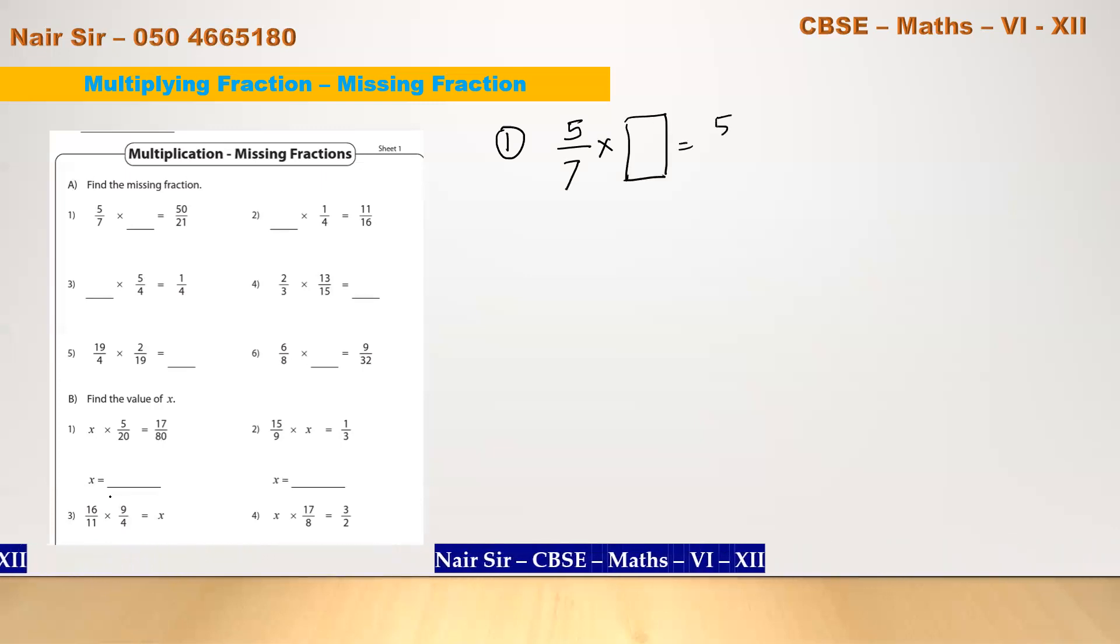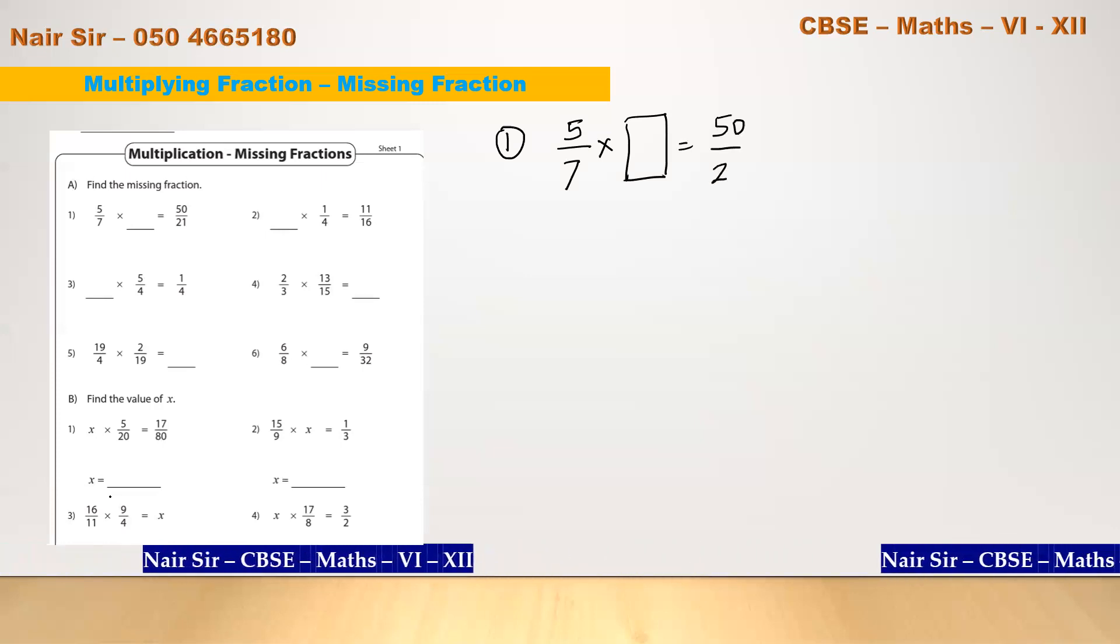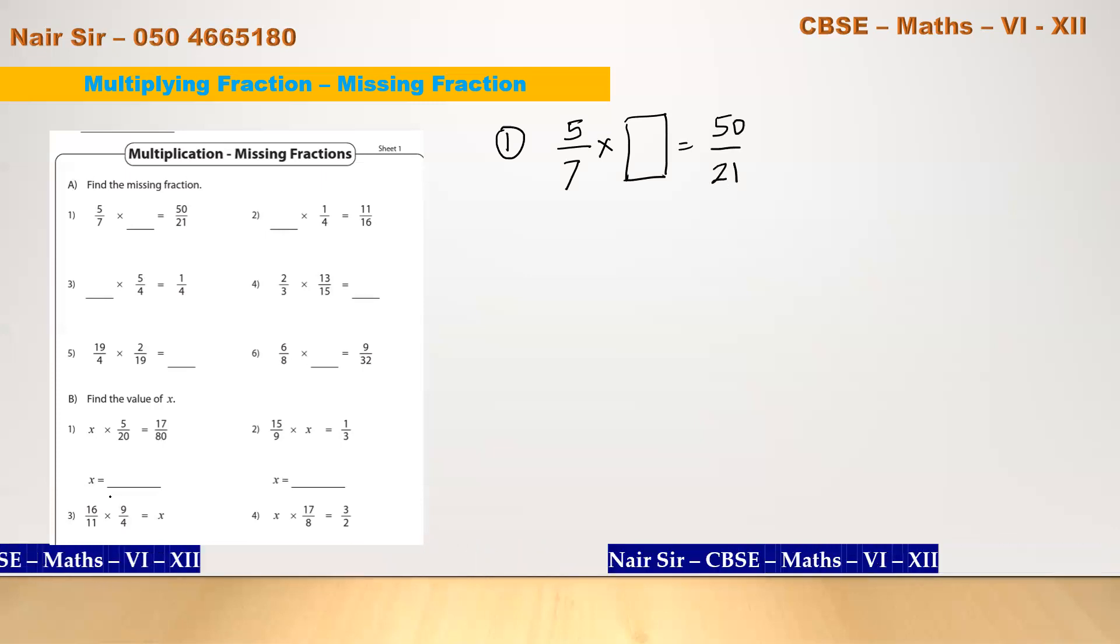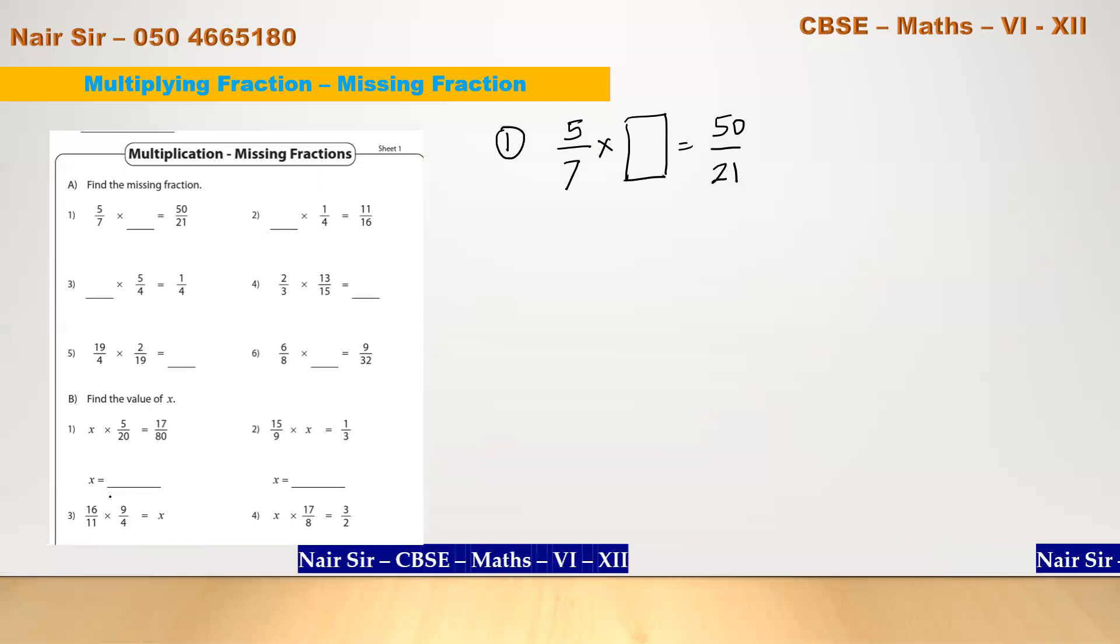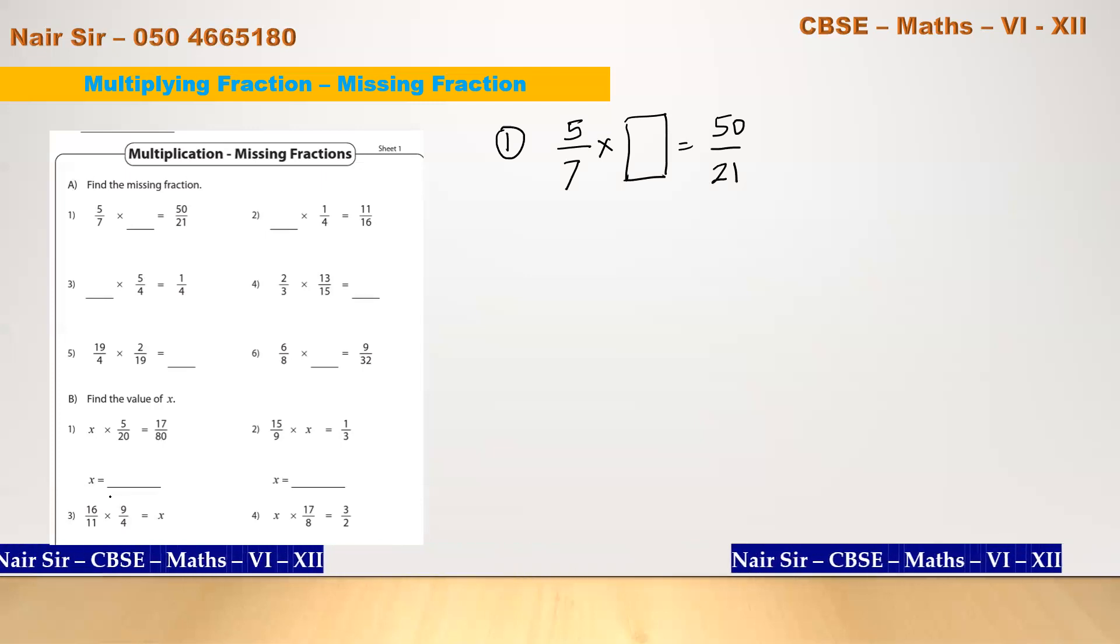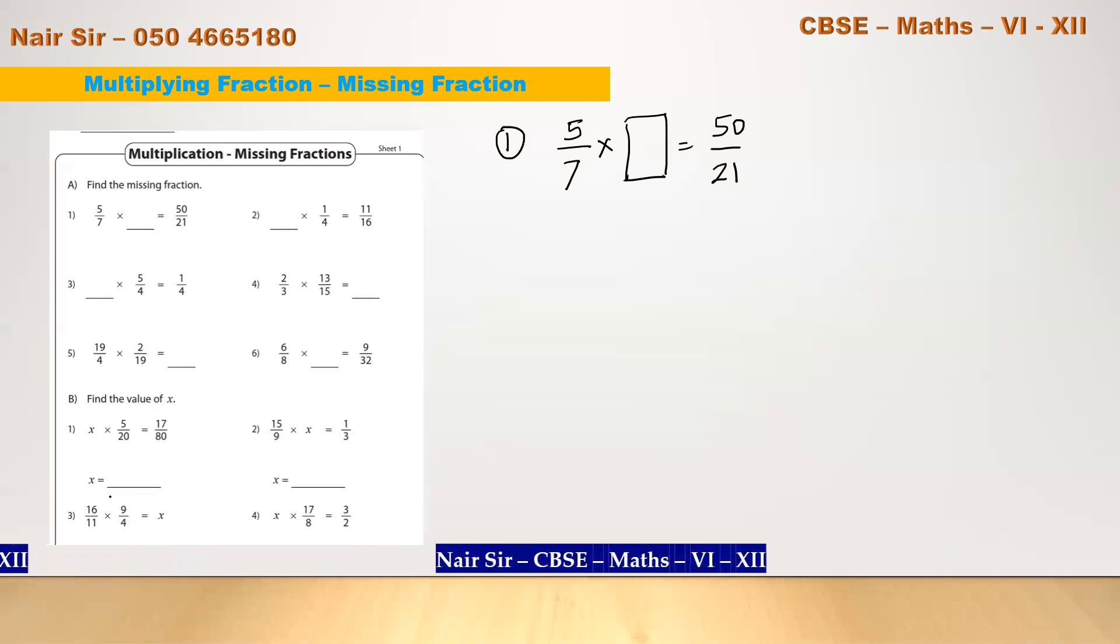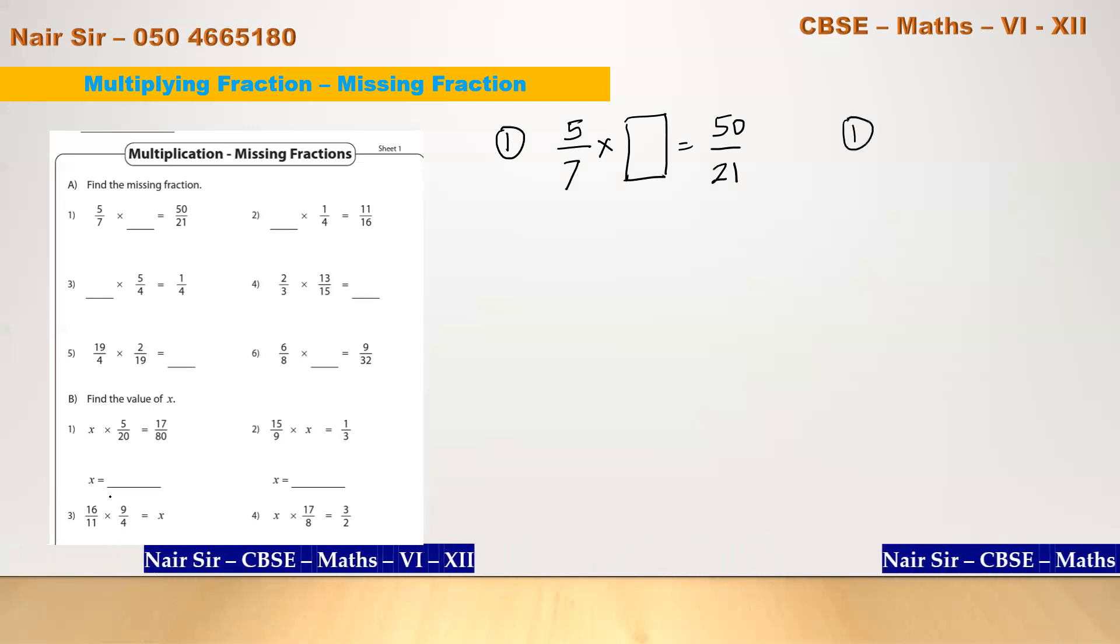Question number one: five upon seven multiply by blank is equal to fifty upon twenty-one. Write the question correctly onto your notebook from your question paper. That's very important because most of the kids make mistakes here, so don't make that kind of silly mistake.